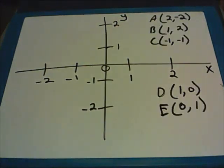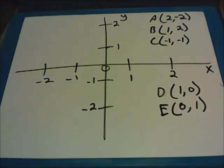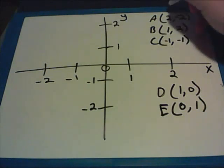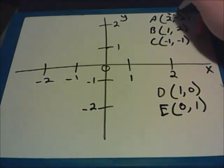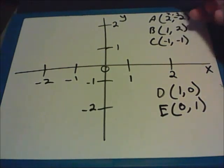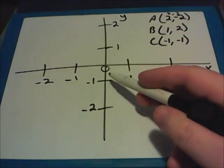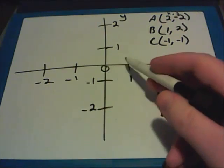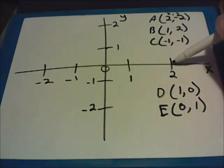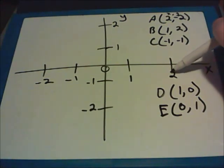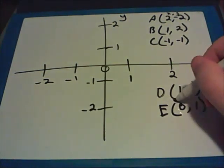A different type of question may give you the coordinate pair and ask you to bubble in where that point is located. We'll do A together. This point is located at two comma negative two. Remember that X always comes first — it may help to label these on your paper as X comma Y. With X first, start at zero and move to the right two places for the positive two on the X line. Then move down on the Y line negative two places. So this point goes right here.